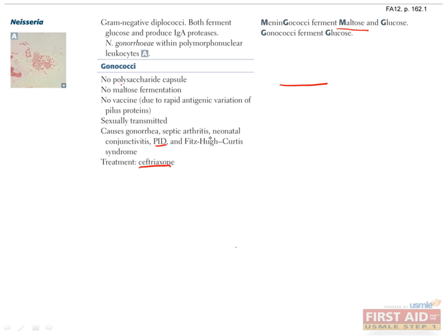A rare complication of PID is called Fitzhugh-Curtis syndrome, whereby inflammation of the uterus and oviduct can cause inflammation of the connective tissue surrounding the liver. Symptoms may include acute onset of right upper quadrant pain, aggravated by breathing or coughing, and referred pain to the right shoulder following an episode of PID.